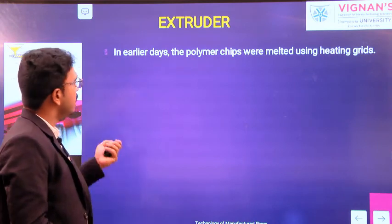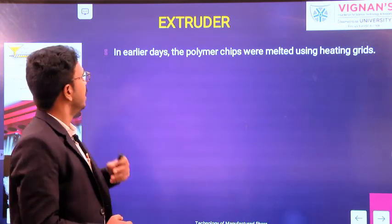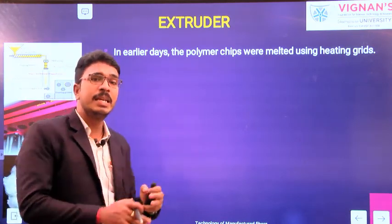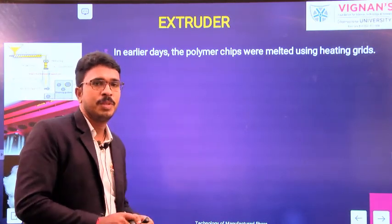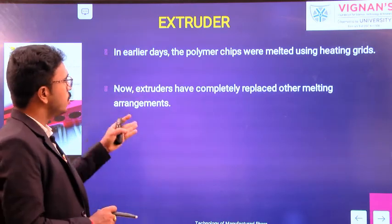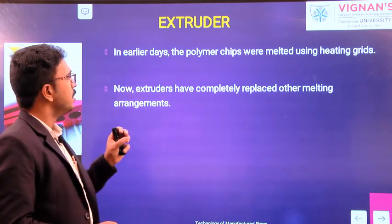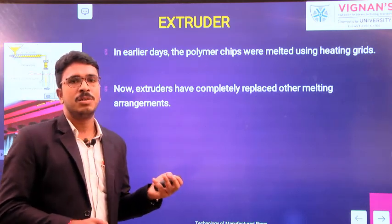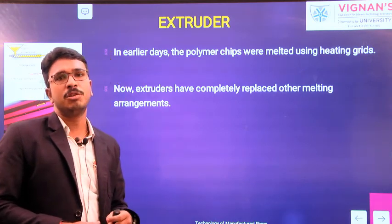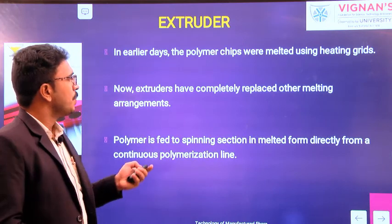If you look at the polymeric chips — in the earlier days the polymeric chips were melted by using heating grits. But now, extruders have completely replaced the other melting arrangements. Nowadays the melt spinning line is equipped with extruders to carry out the melting process.